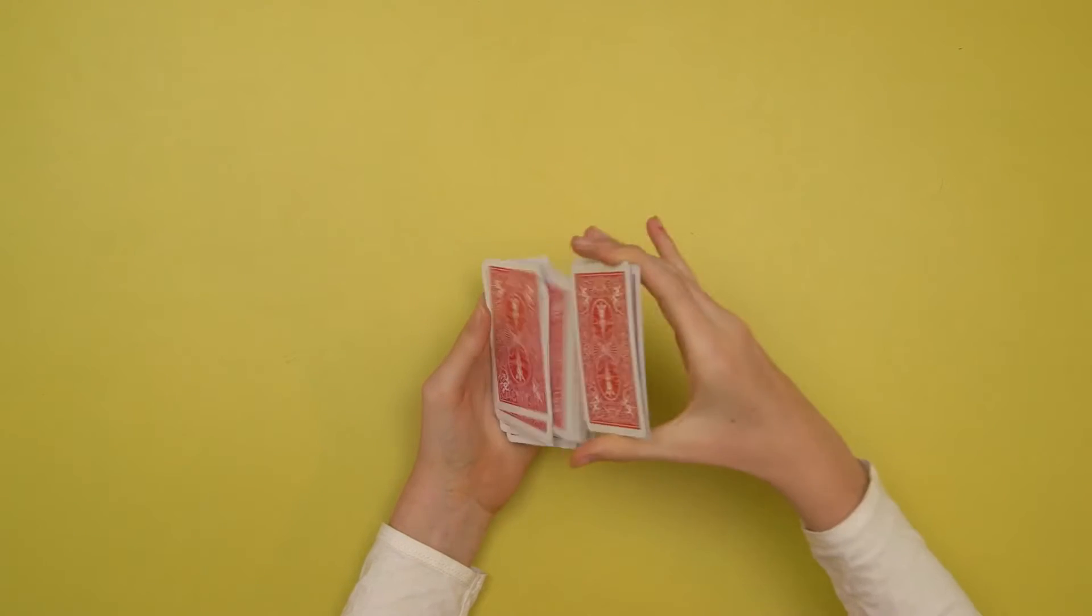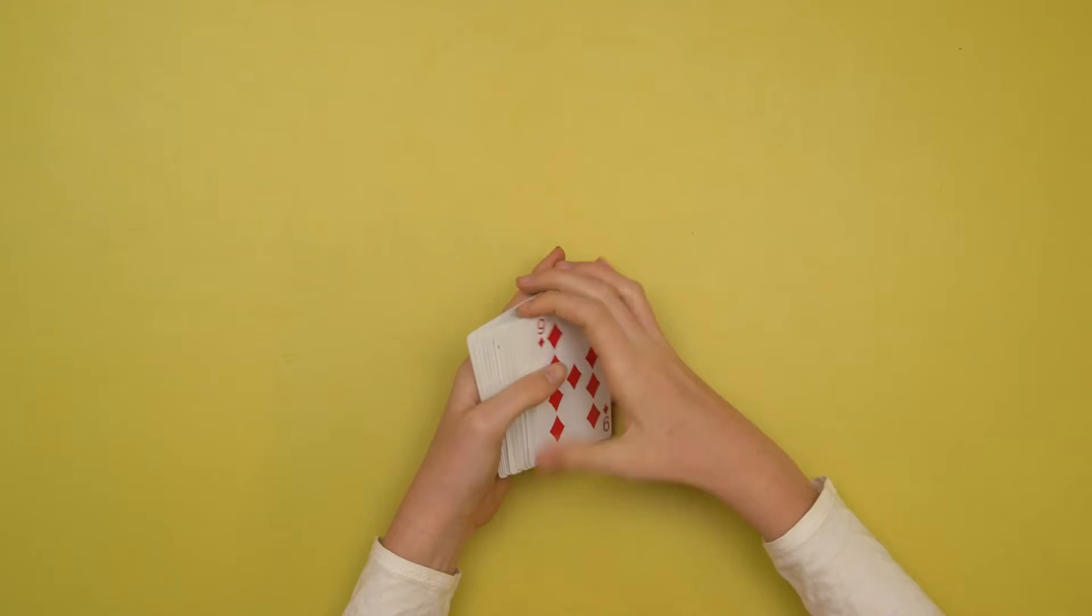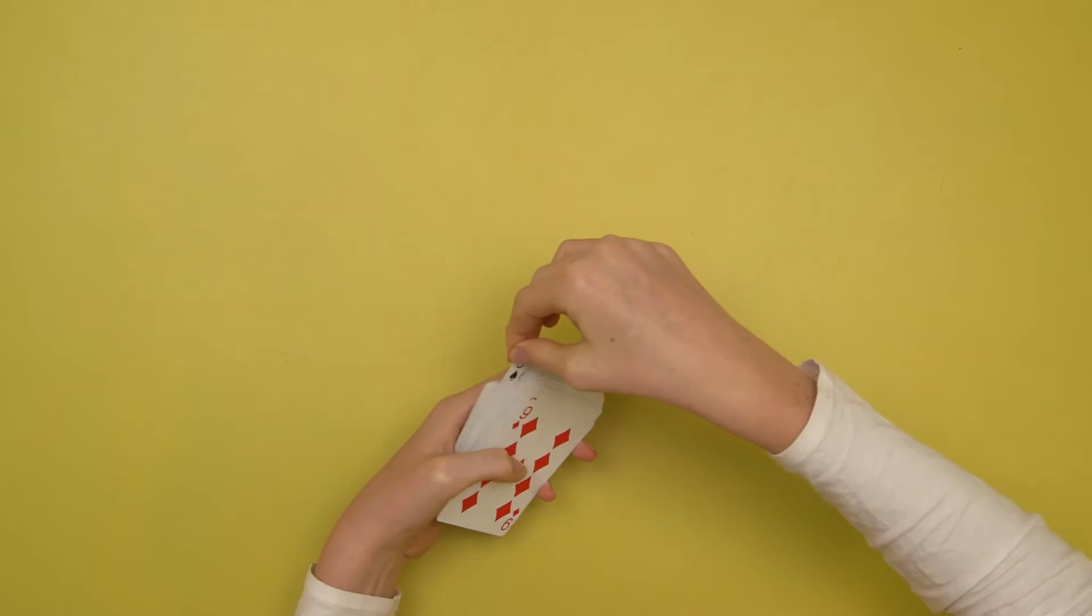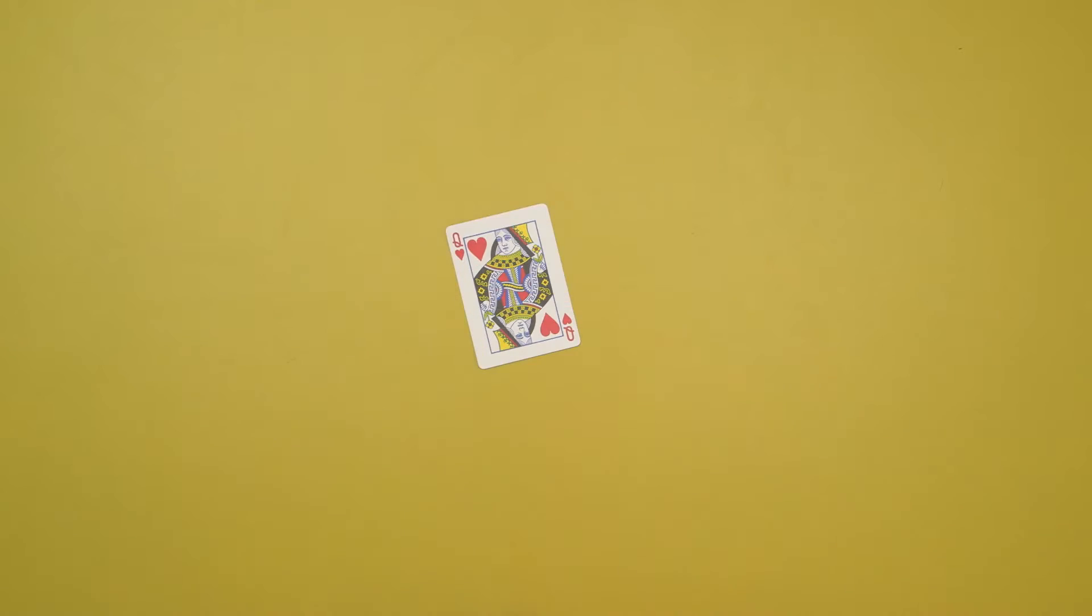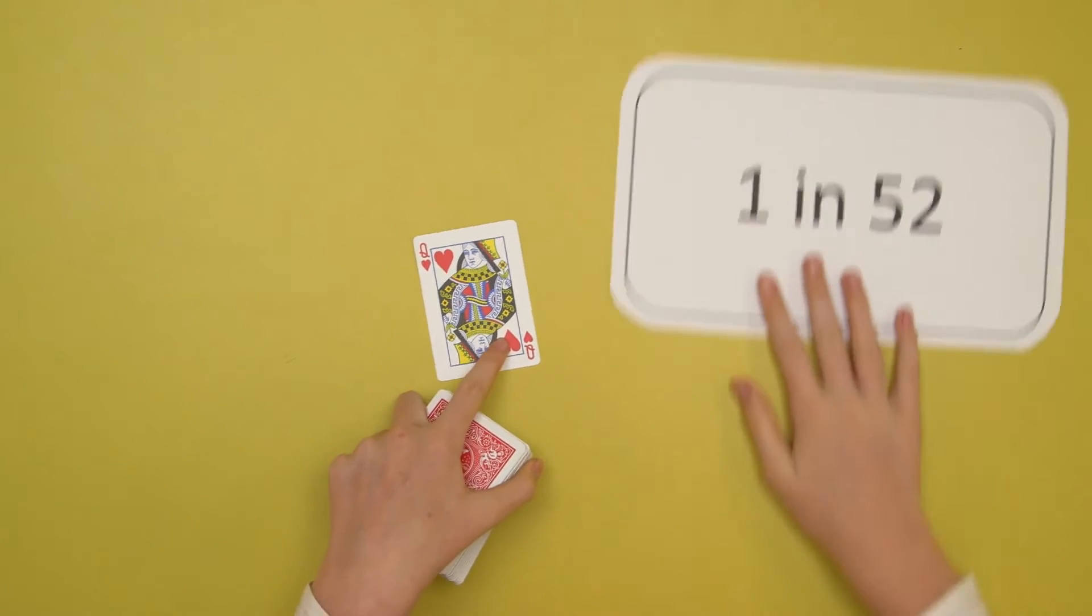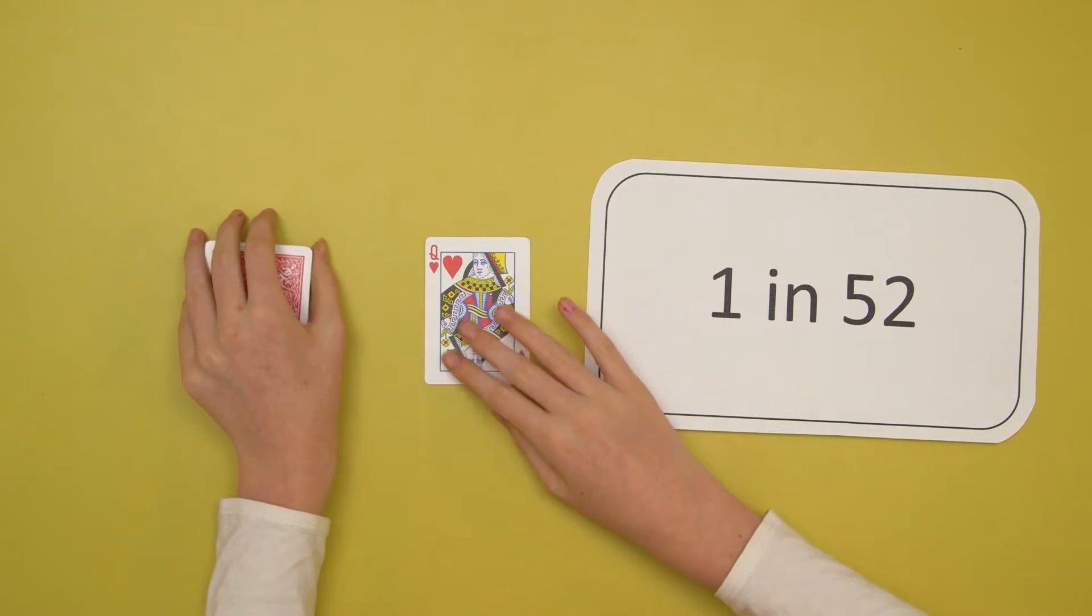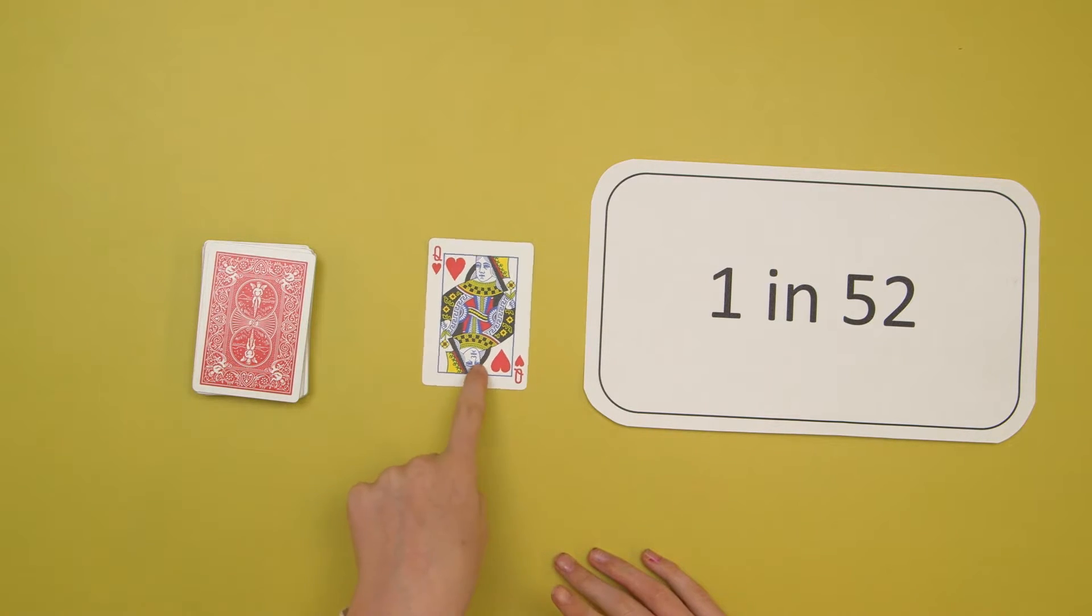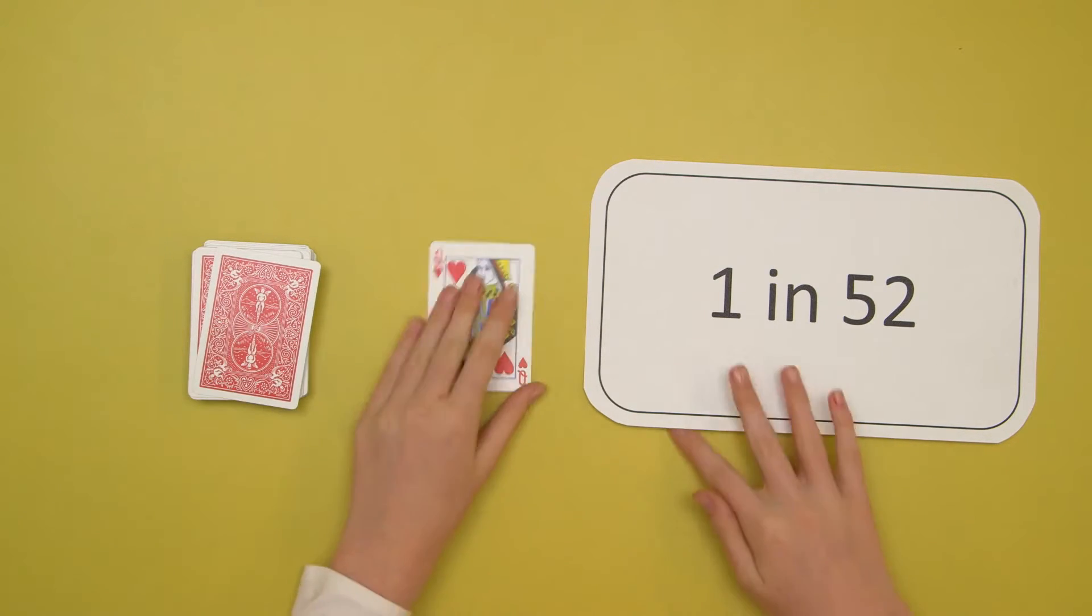If you were to pick out any card from the deck, for example this one, the Queen of Hearts, you would have a 1 in 52 chance of getting it because there is only 1 Queen of Hearts in the deck but 52 possible cards to choose from.